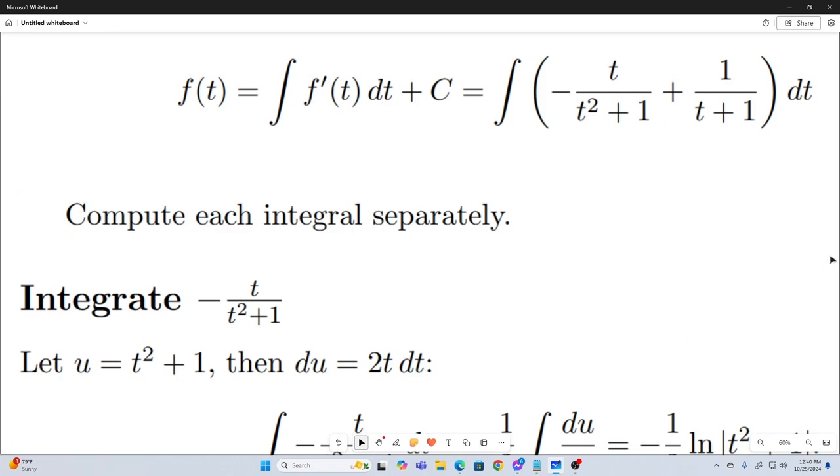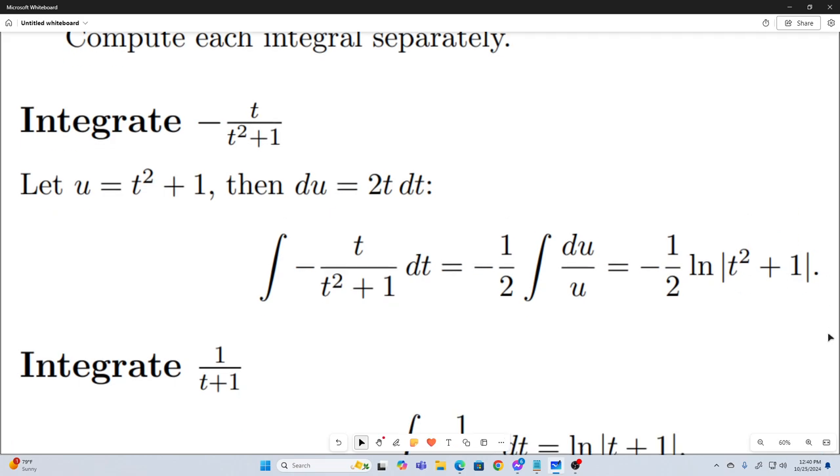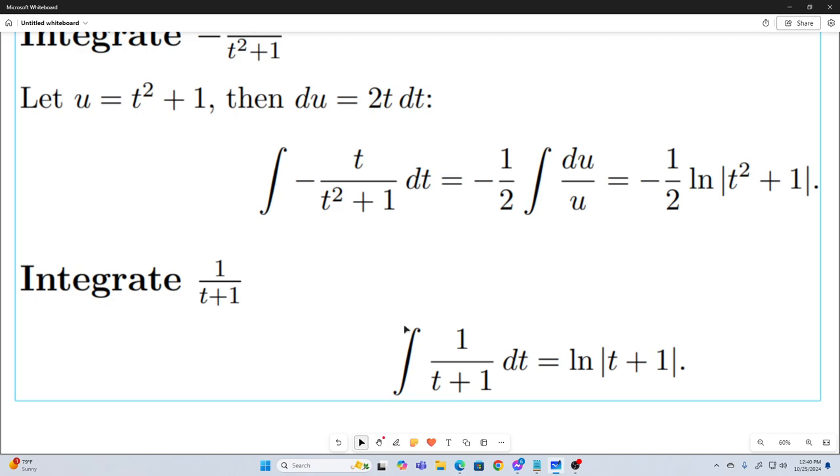All right. So the first integral can be solved like this. We just let u equal t squared plus 1, then du is equal to 2 dt. And you just get this. It's pretty standard stuff. And we don't actually need the absolute values here, obviously. I don't know why I put them in there. And now we're going to integrate the other one. And that's easy. That's just the natural log. And we do need absolute values here.